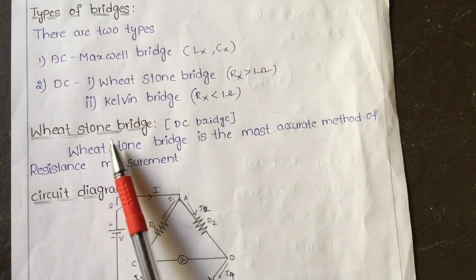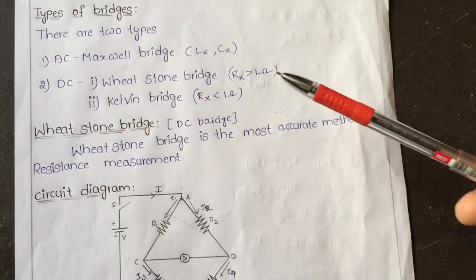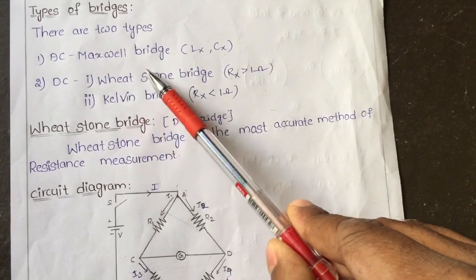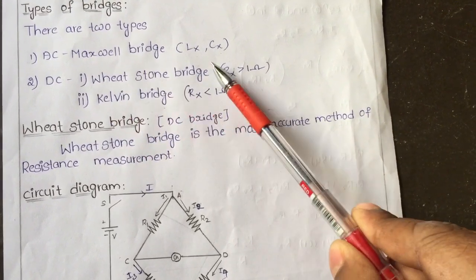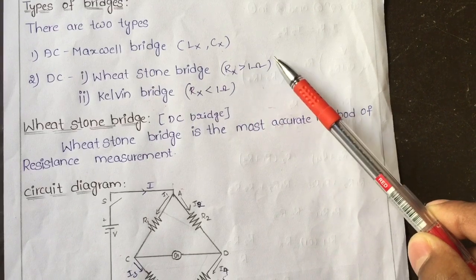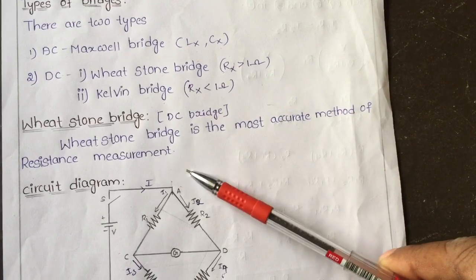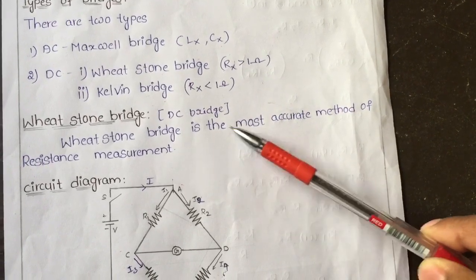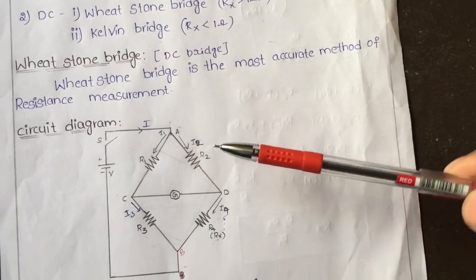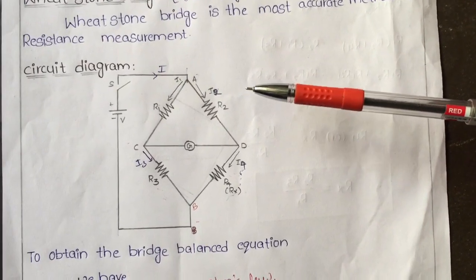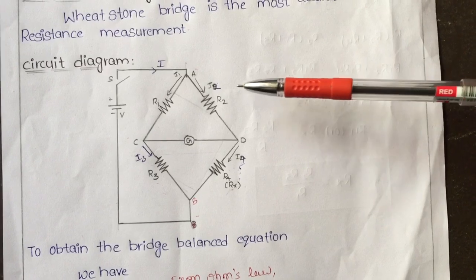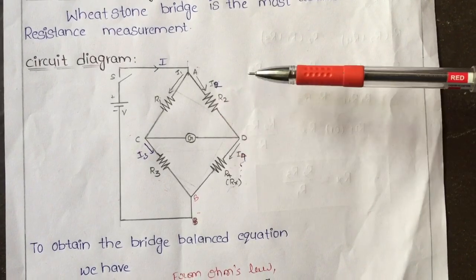The Wheatstone bridge is a DC type of bridge. By using this we are going to calculate unknown resistance which is more than 1 ohm — it is the most accurate method of resistance measuring. Bridges are like trees: just as trees have branches, the bridge circuit diagram also has branches.